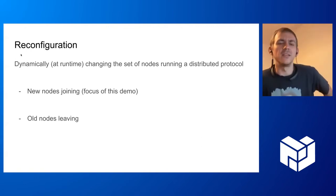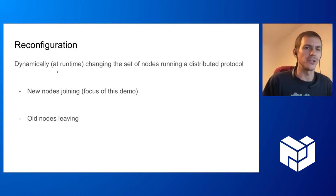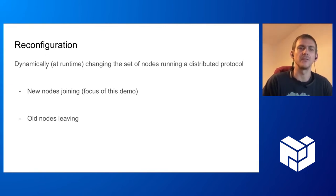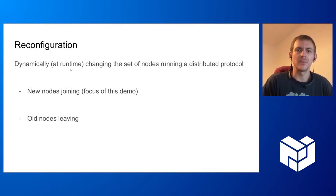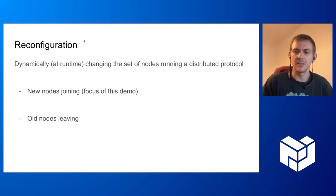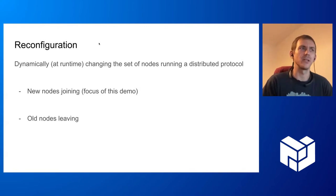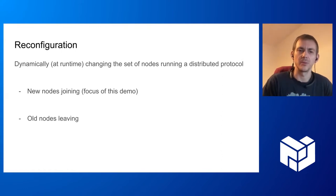Now, in this demo I'll be showing reconfiguration. So what is reconfiguration of such a system? In a distributed system, usually under reconfiguration we understand dynamically - that means at runtime - changing the set of nodes running a distributed protocol. So we have some nodes called validators in Lotus that are executing some agreement protocol, and then we want to add some nodes while the system is running without disrupting the functioning of the system.